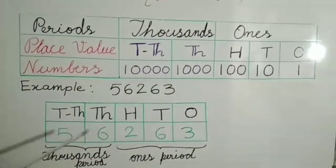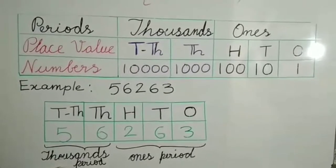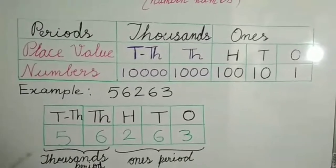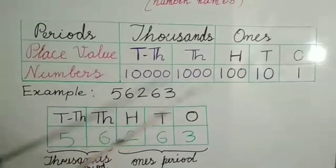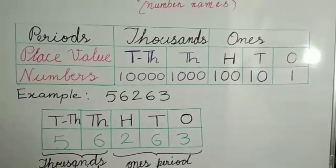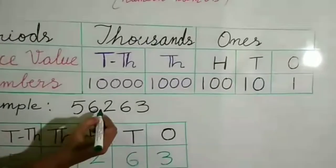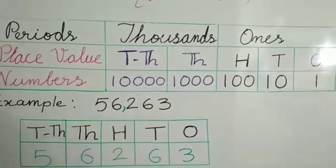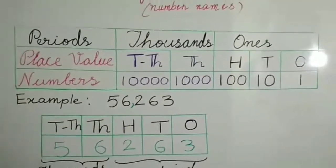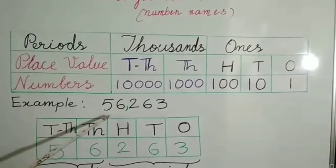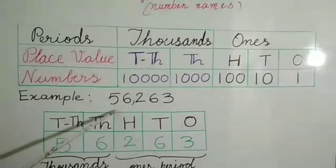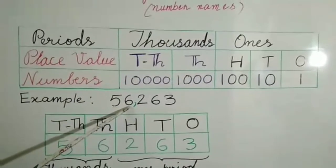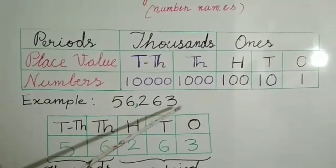Two hundred sixty-three is in the ones period. Fifty-six is in the thousands period. When writing a five-digit number without a chart, we use a comma separating the ones period. This is the ones period and this is the thousands period. So we read the number as fifty-six thousand two hundred sixty-three.